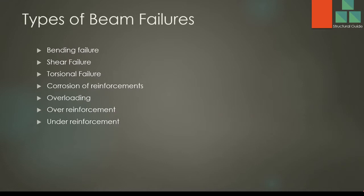Why do beams fail? What are the beam failure methods? How does a beam fail? All those will be discussed today. Beam failures can mainly be categorized under these categories: bending failure, shear failure, torsion failure, failure due to corrosion of reinforcement — that's a durability issue — overloading, over-reinforcement, and under-reinforcement. Let's discuss in detail about each type of failure.